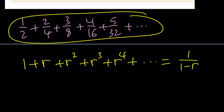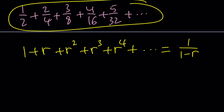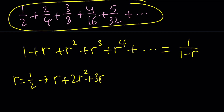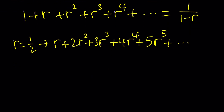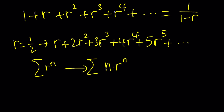Looking at the exponent sum with r = 1/2, we can write it as r + 2r² + 3r³ + 4r⁴ + 5r⁵ + ... Notice that r is raised to the power n and multiplied by n. The question is whether we can find a closed form for this sum — and the answer is yes. There are two ways; let me show you.